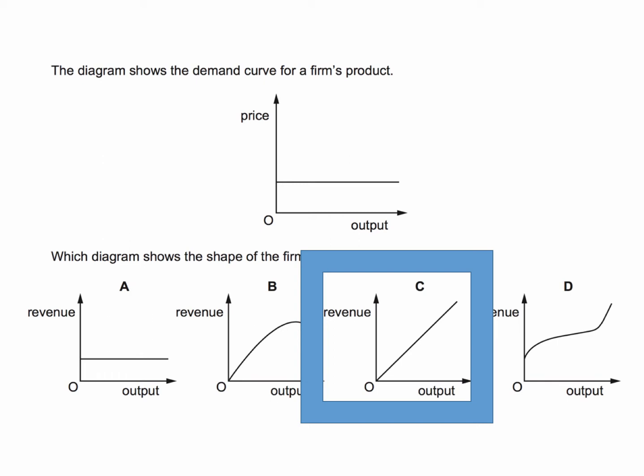Revenue will increase at a uniform rate as output expands. Let's think about the reasoning behind this. The demand curve is the average revenue, and it seems to be the case that the firm can sell any amount at one price.